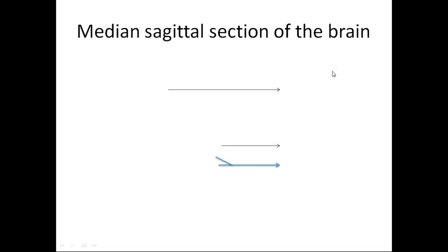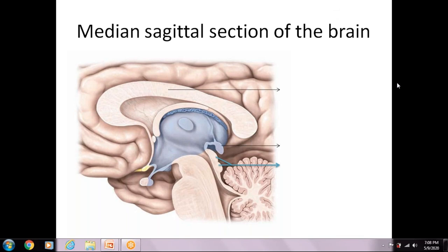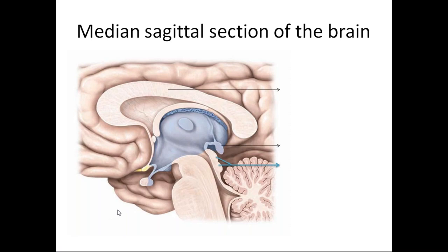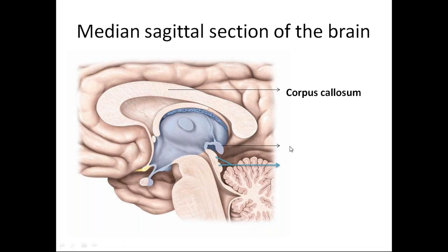I'll show this in a picture. The first arrowed part is the corpus callosum. Its parts are the posterior splenium, body, genu, and rostrum. This is the fornix. The second arrowed part is the pineal gland. The third one is the superior and inferior colliculus.